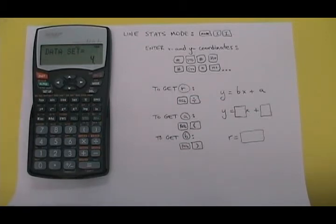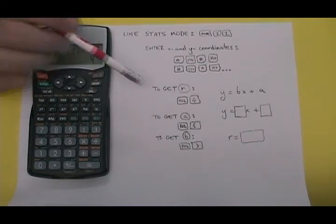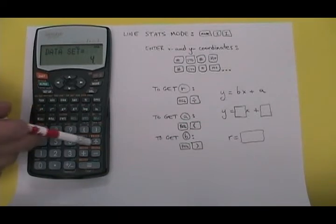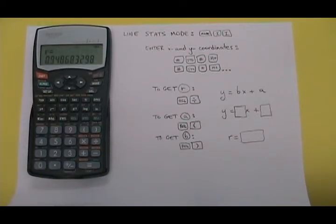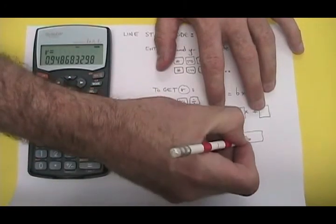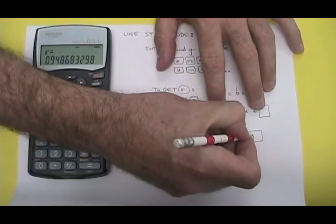Now all of the x and y coordinates have been entered. I need to find my R value. To get R, I just have to enter recall divided by. So I press the recall button and then divided by. And I find out that my R value is 0.94868. I'm going to round that to 0.95. My R value is 0.95.